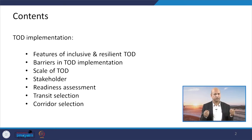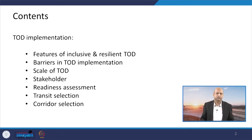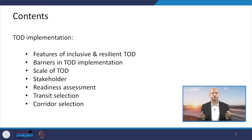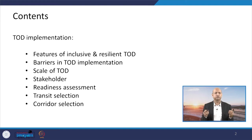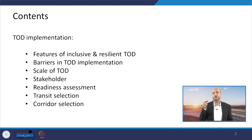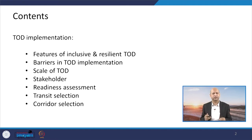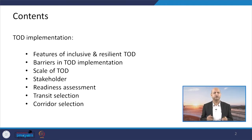We will also cover the role of stakeholders - which we have discussed before - but when we implement, what are their postures and roles. Then the readiness assessment when it is completely ready from different angles to implement the TOD, how to select the particular transit whether BRTS or MRTS, what basic parameters help us choose a certain type of TOD, and how to select the corridor whether A, B, or C. All these things we will discuss in today's lecture.